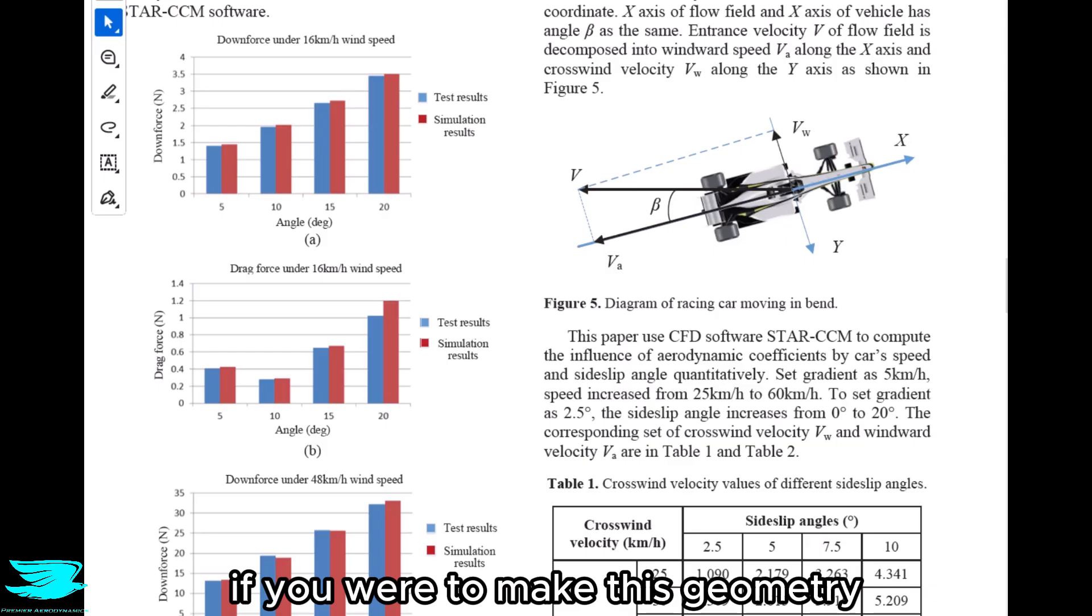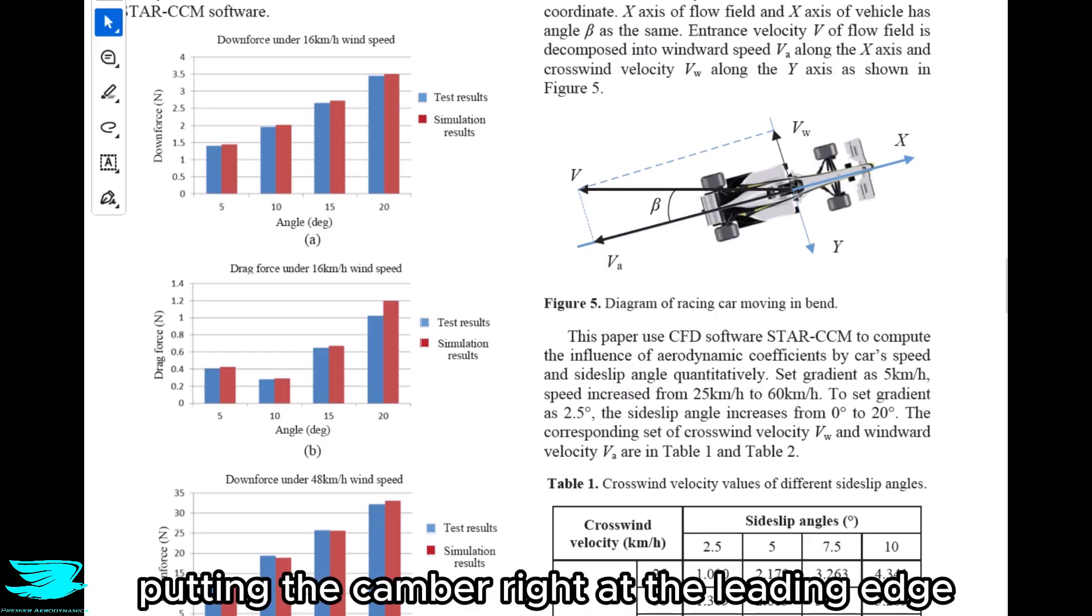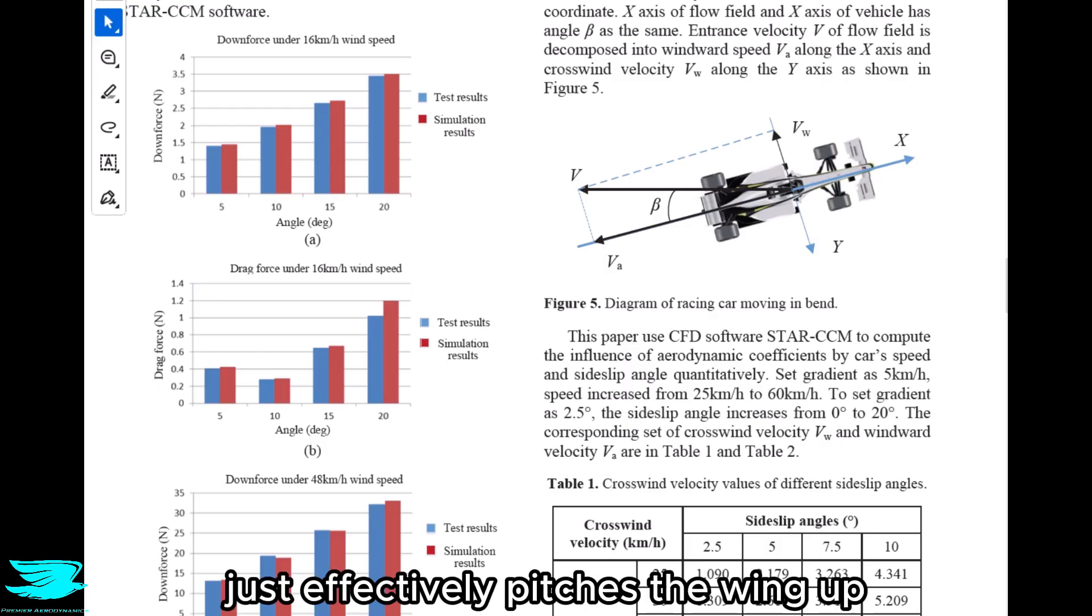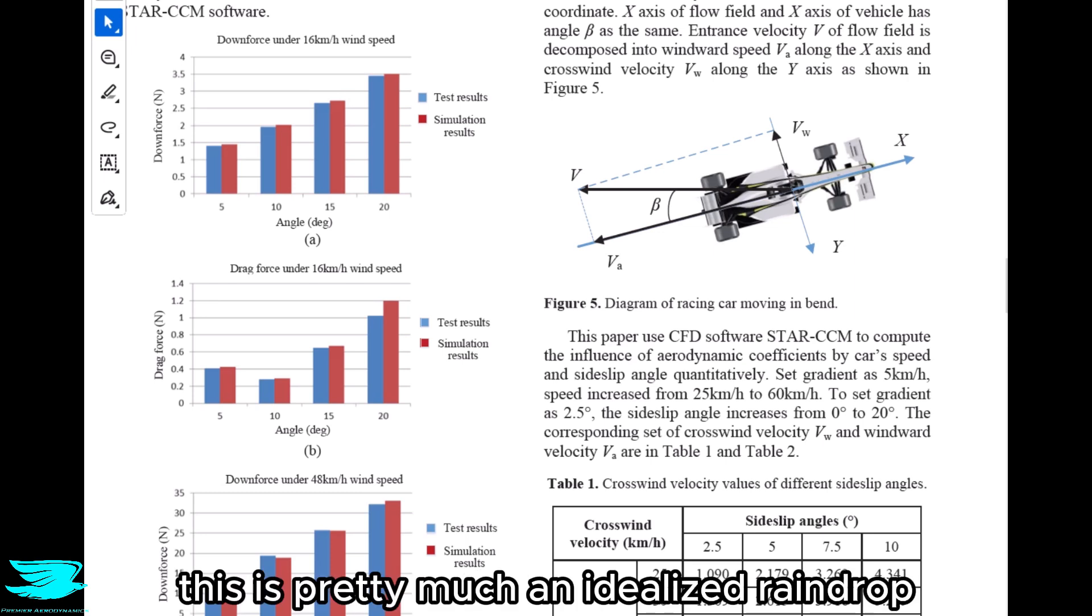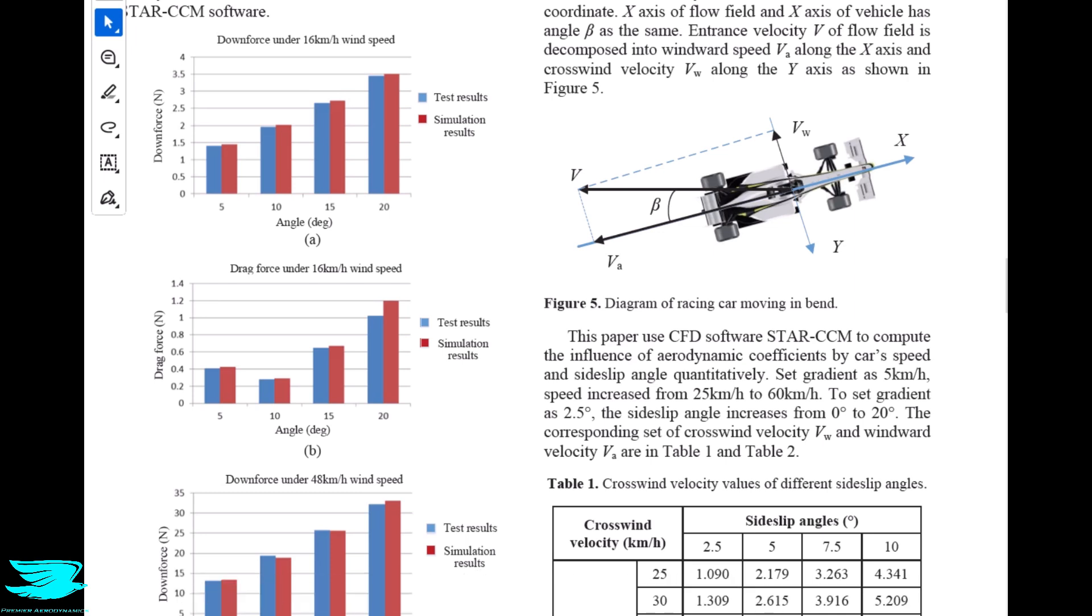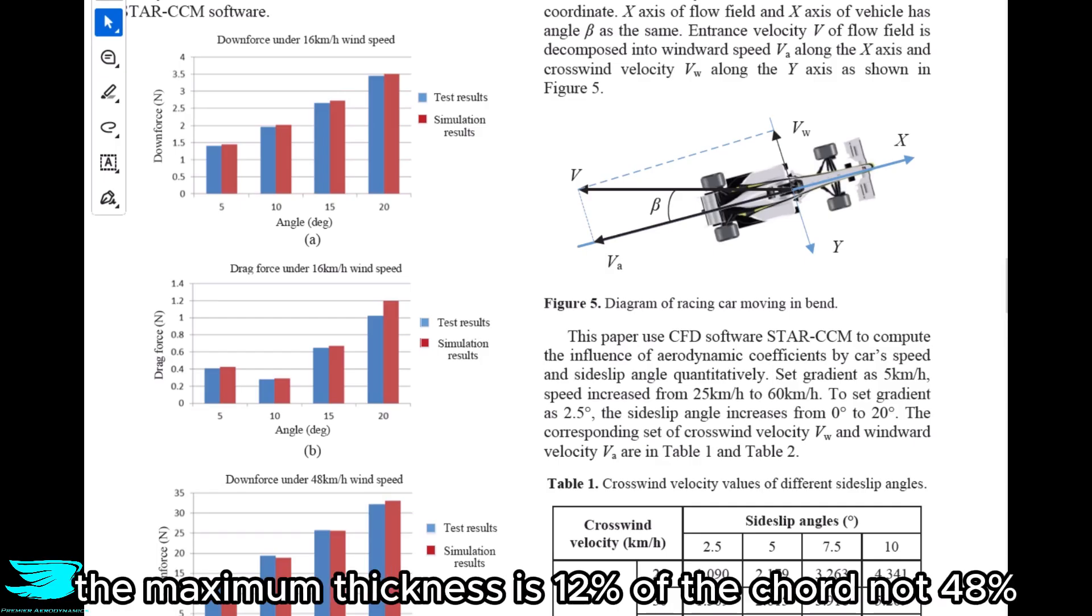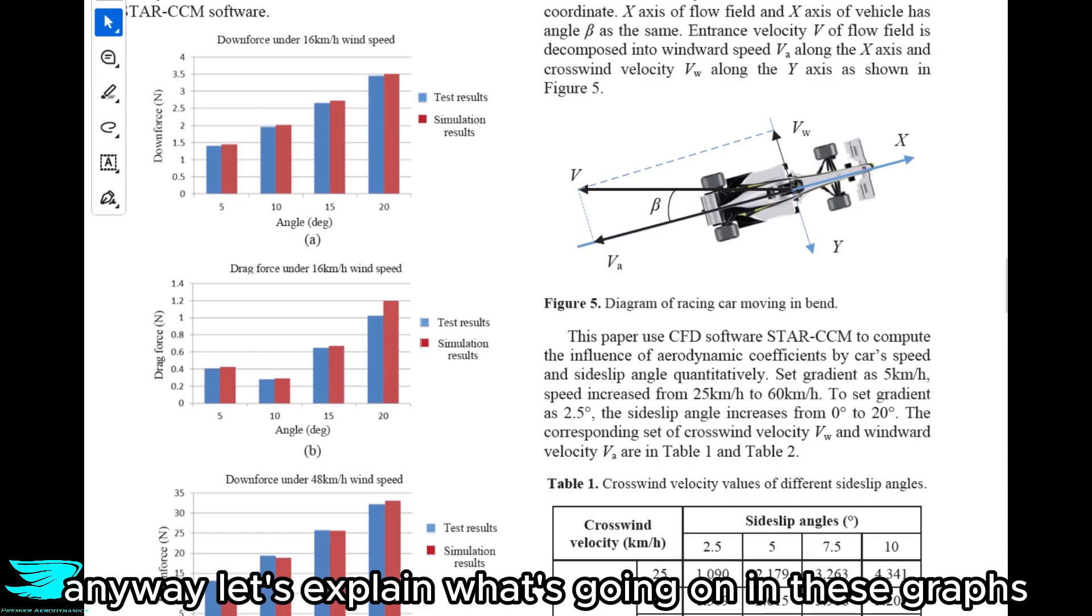If you were to make this geometry, what you would see is that putting the camber right at the leading edge just effectively pitches the wing up. It's really an odd geometry. In effect, this is pretty much an idealized raindrop at an angle of attack. For an airplane wing like a NACA 4412, the maximum thickness is 12% of the chord, not 48%. So this is just really weird. Anyway, let's explain what's going on in these graphs.